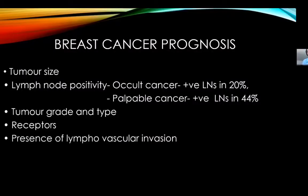Breast cancer prognosis depends on how big the tumor is and the status of the lymph nodes. If the lesion is clinically occult, lymph node positivity is low. If the lesion is palpable, lymph node positivity is more than twice as high. We'd rather pick it up when it is not palpable — below at least one centimeter in size is what we are aiming for. A palpable lesion is at least 2 to 2.5 centimeters, by which time 54% of the lymph nodes will be positive.